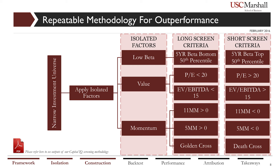The same concept was applied to five-month momentum. We also included a technical indicator of momentum: the crossing of the 50-day moving average above the 200-day moving average, known as the Golden Cross. Conversely, we shorted stocks with negative 11-month momentum, negative 5-month momentum, and those where the 50-day moving average crossed below the 200-day moving average, known as the Death Cross.